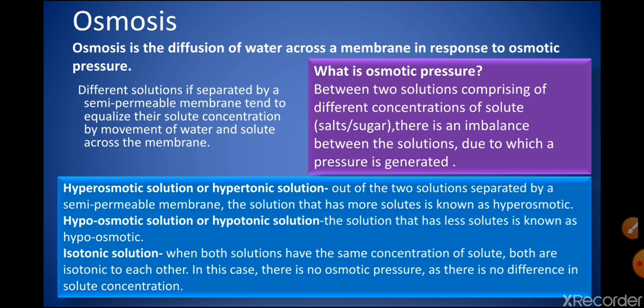Before we jump straight to the problems of salt balance, we need to discuss certain terminologies and the factors responsible for these salt balance problems that occur in aquatic vertebrates. The first term is osmosis — it is the process of diffusion of water across a membrane in response to osmotic pressure.